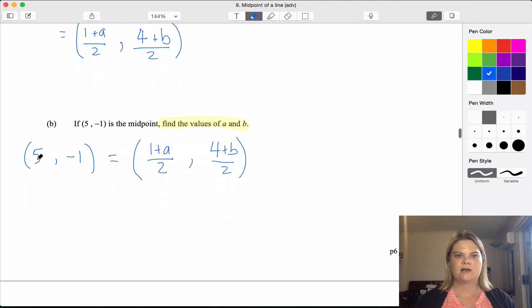Now I can say 5 is the x value, so equals this: 5 equals (1+a)/2. Keep solving to find out what a equals, because that's what our question is asking us. 10 equals 1 plus a, 9 equals a.